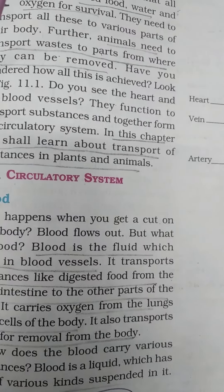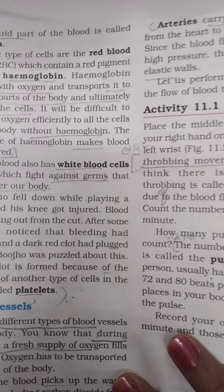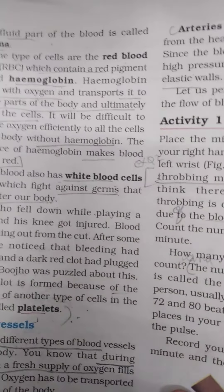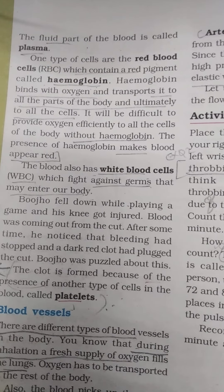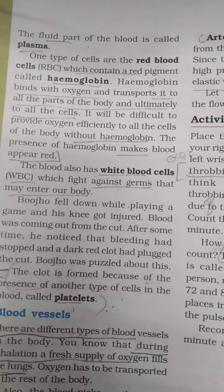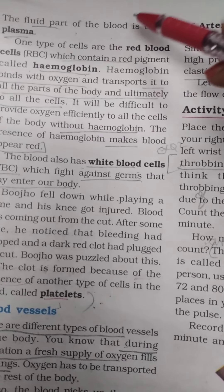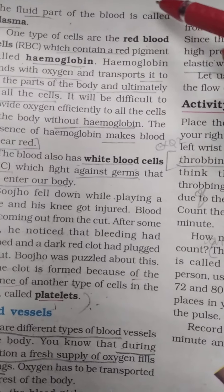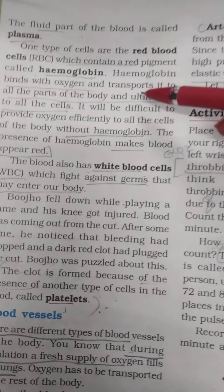Blood consists of plasma, RBC, WBC, and platelets. The liquid part of the blood is known as plasma, in which the cells are suspended.